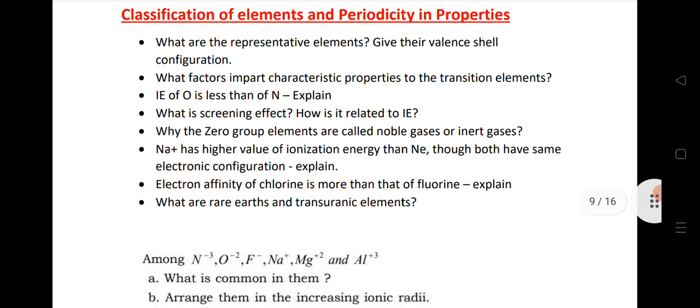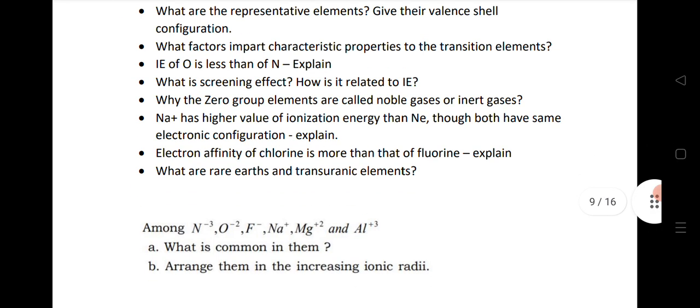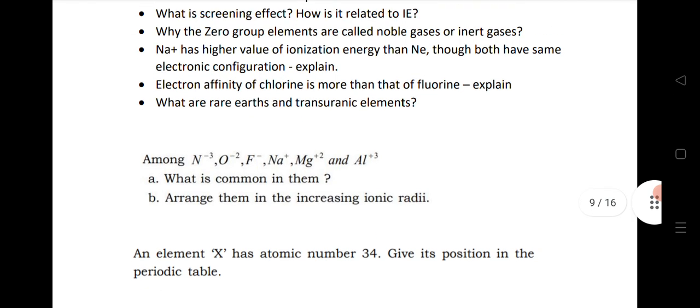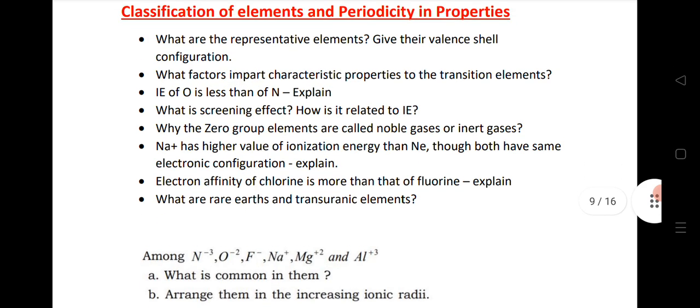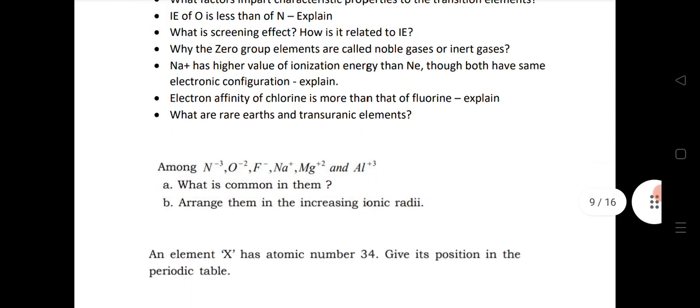The first questions are: representative elements, factors, IE of O is less than N, explain, what is screening effect, how is it related to IE, why the zero group elements are called noble gases or inert gases, and does Na+ have higher ionization energy than Ne. These are very important questions. The last two questions are very important. If you read these questions they definitely give you good marks from this chapter, classification of elements.